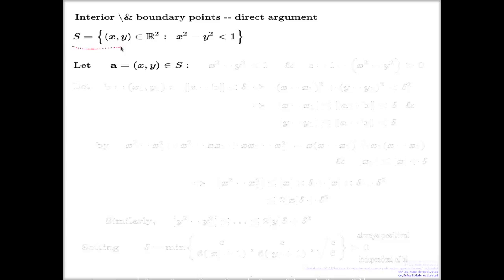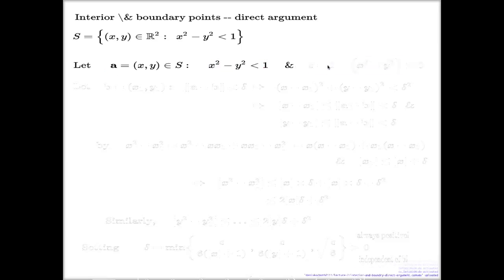The claim we're proving is that this set is open. This set is open, so every point in the set is interior — every point comes together with some ball around it. The actual content of the proof will be presenting the radius for such a ball. I'm choosing a point which belongs to this set, so it's subject to this condition, and now I will present a ball around this point of some radius such that the whole ball will also be part of this set.